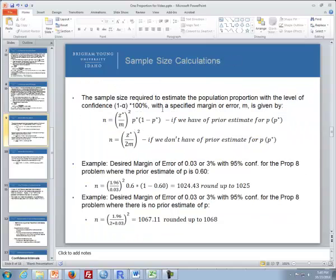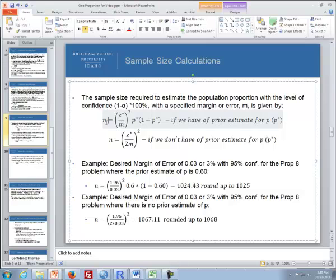Sample size is required to estimate the population proportion with a level of confidence, 1 minus alpha times 100%, with a specified margin of error, M, and it is given by, and there's two sample size calculations. N as a sample size is equal to the critical value of Z for a level of confidence divided by a specified margin of error, and then we take that quantity and square it. We times it by P star, and then times it again by 1, times it also by 1 minus P star. And P star represents a prior estimate of P. If we know or we have an idea of what the prior estimate of P is, we can put that into this equation.